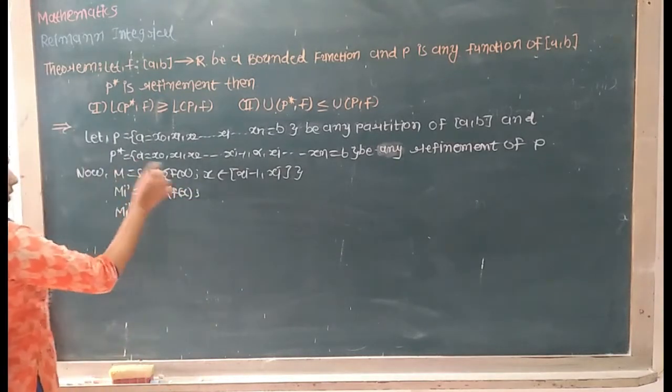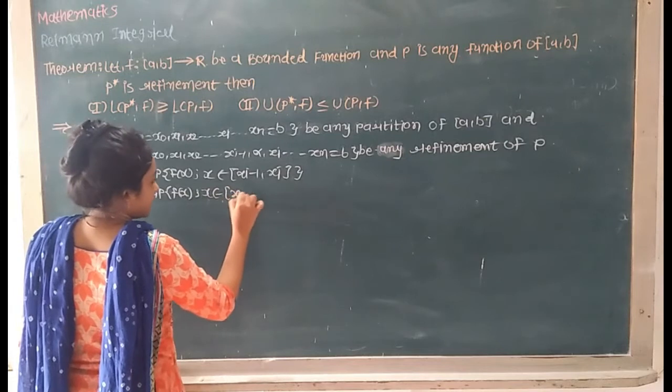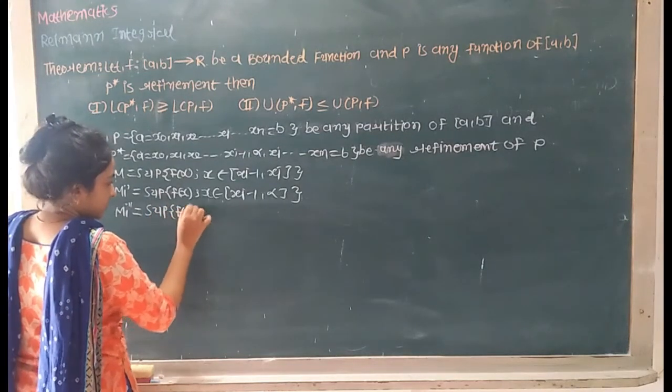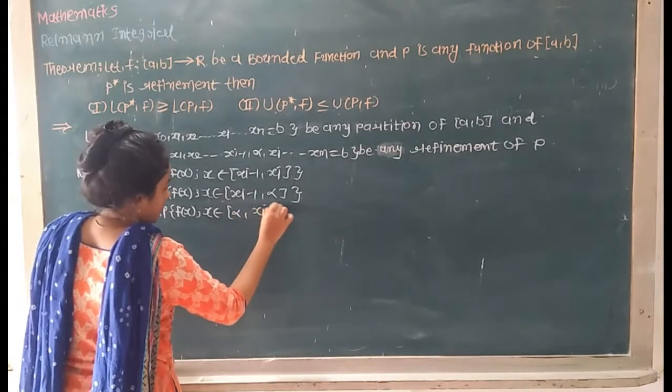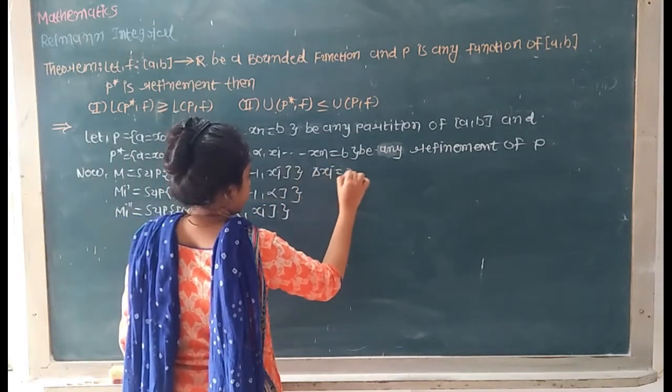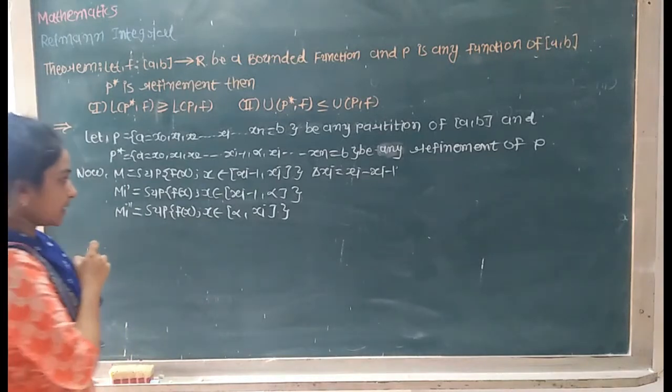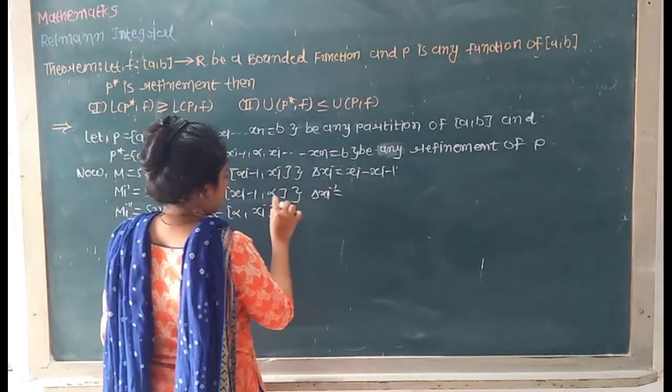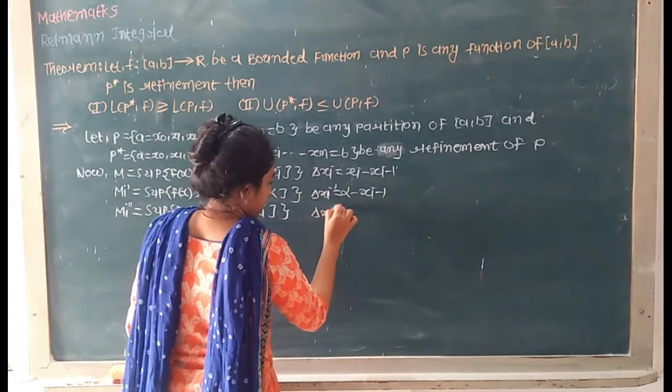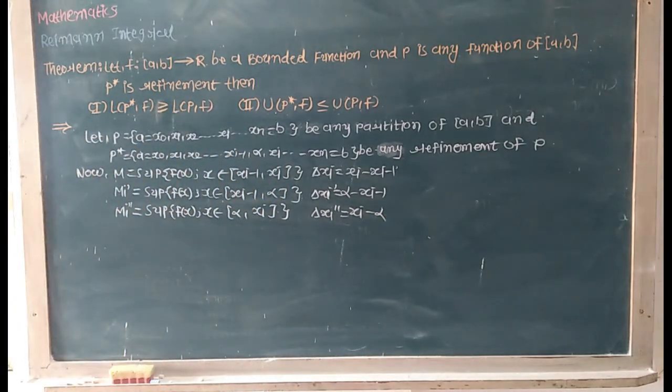Mi is equal to supremum of F(x), X belongs to Xi minus 1 to Xn. Supremum of F(x), X belongs to Xi minus 1 to alpha, and alpha to Xn are two partition by segment. Now, we have partition.